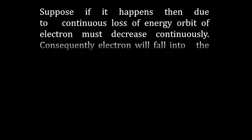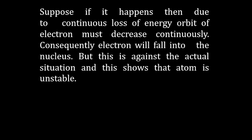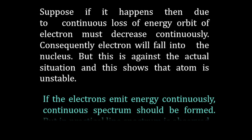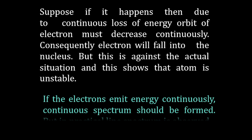Suppose if it happens, then due to continuous loss of energy, the orbit of the electron must decrease continuously. Consequently, the electron will fall into the nucleus — but this is against the actual situation, and this shows that the atom would be unstable. Furthermore, if the electron emits energy continuously, then a continuous spectrum should be formed. But in reality, a line spectrum is observed.